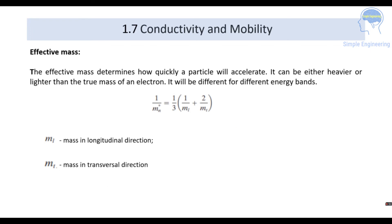The effective mass determines how quickly a particle will accelerate; it can be either heavier or lighter than the true mass of an electron, and it differs for different energy bands. The effective mass is: 1/m_n* = (1/3)(1/m_l + 1/m_t), where m_l is the mass in the longitudinal direction and m_t is the mass in the transverse direction.